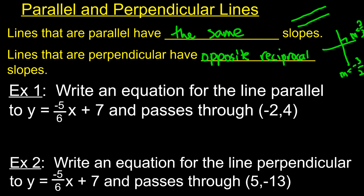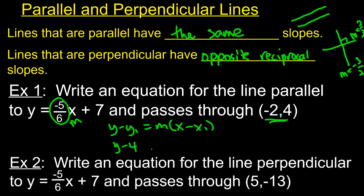Example: write an equation for the line parallel to y equals negative 5/6 x plus 7 that passes through (-2, 4). Since it's parallel, the slope is the same: m equals negative 5/6. I'll use point-slope form: y minus y1 equals m times (x minus x1). Plugging in: y minus 4 equals negative 5/6 times (x minus negative 2), which gives y minus 4 equals negative 5/6 times (x plus 2). That's the equation.